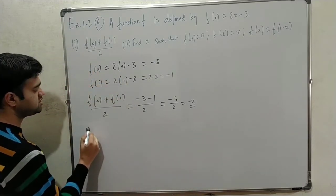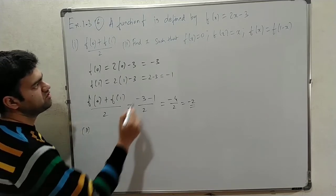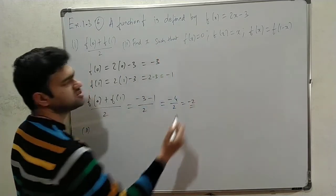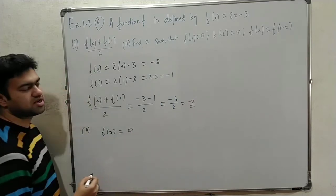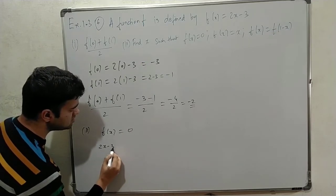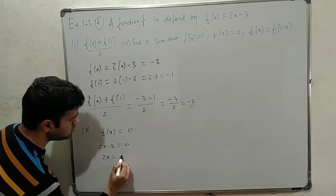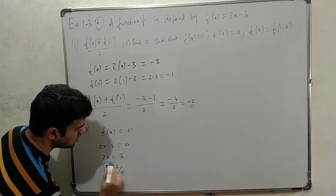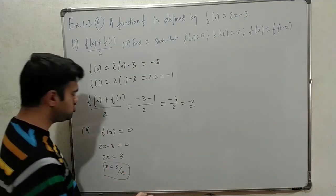Second sub-question: find x such that f of x equals 0. Since f of x equals 2x minus 3, set 2x minus 3 equal to 0. So 2x equals 3, meaning x equals 3 by 2. That is the answer. Simple — just substitute and solve.